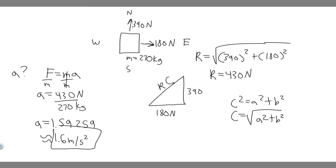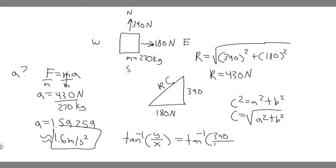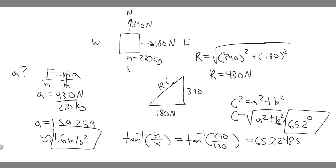Now I want you to find the direction. If you're given two force components, x and y, you can calculate the direction by taking the arctangent of the y force over the x force. So take arctan(390/180). When you plug this into your calculator, you get 65.22485 degrees — essentially 65.2 degrees. So the direction is 65.2 degrees, and the magnitude was 1.6 meters per second squared. These are your two answers, and hopefully you found this useful.